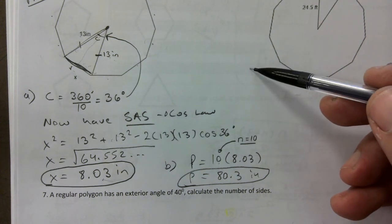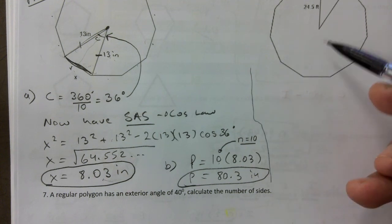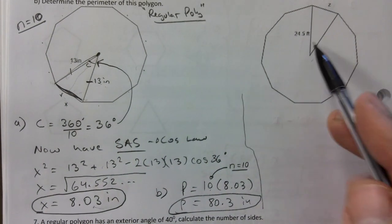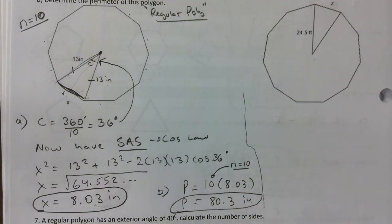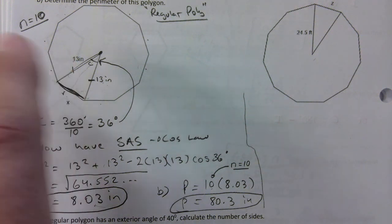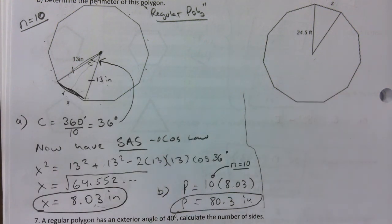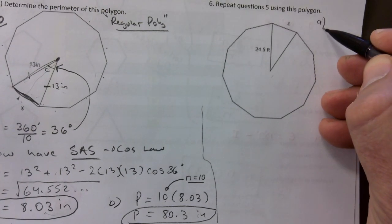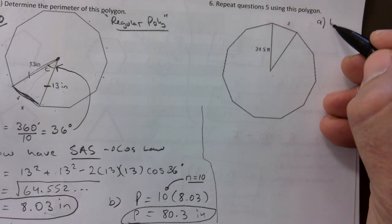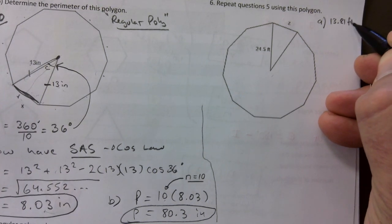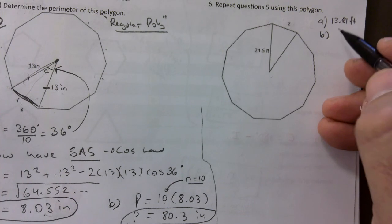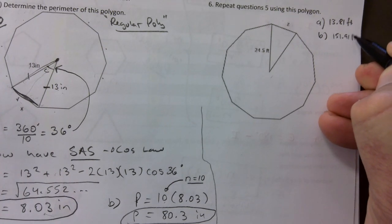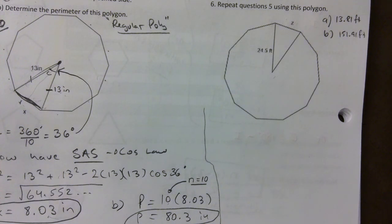Try question six on your own before we go — it's the same process with a different number of sides. The answer for part A is 13.81 and for part B the perimeter is 151.91 feet.